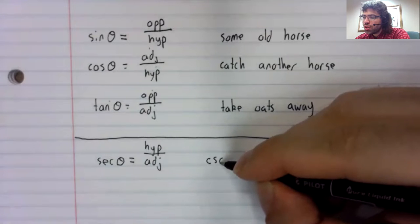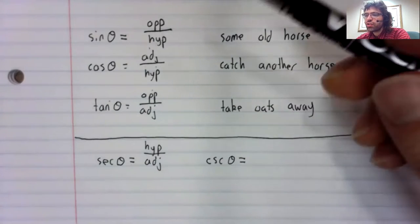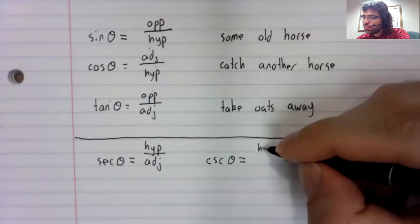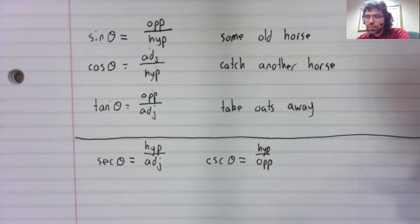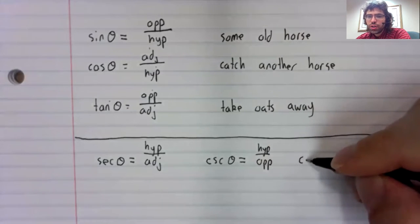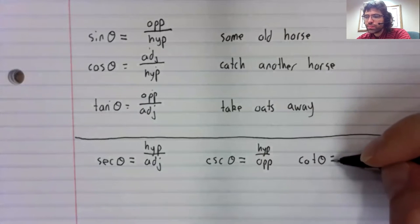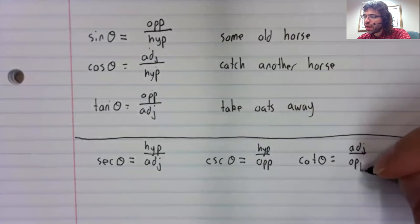The cosecant is the reciprocal of the sine. The cotangent is the reciprocal of the tangent.